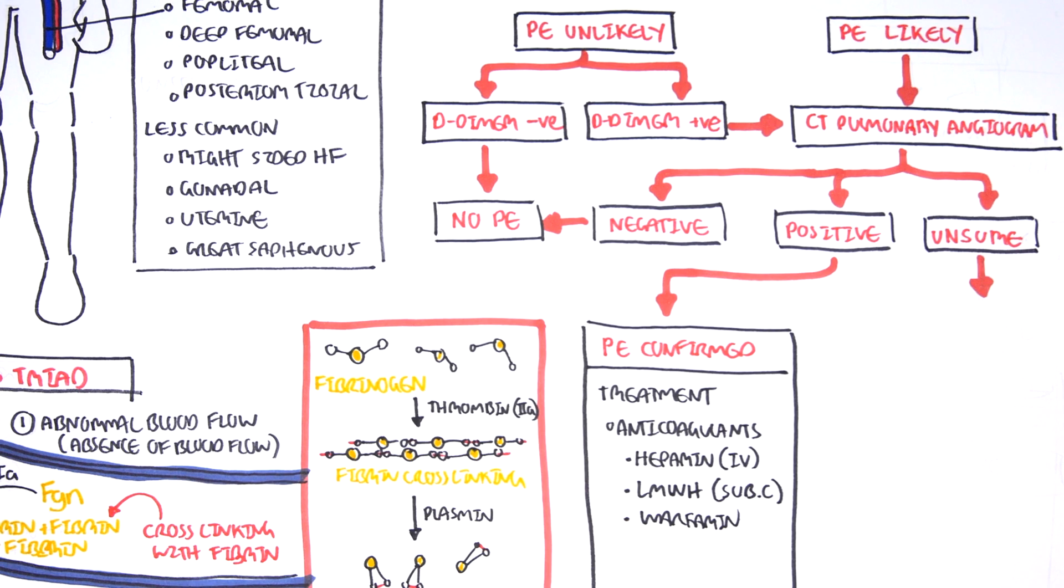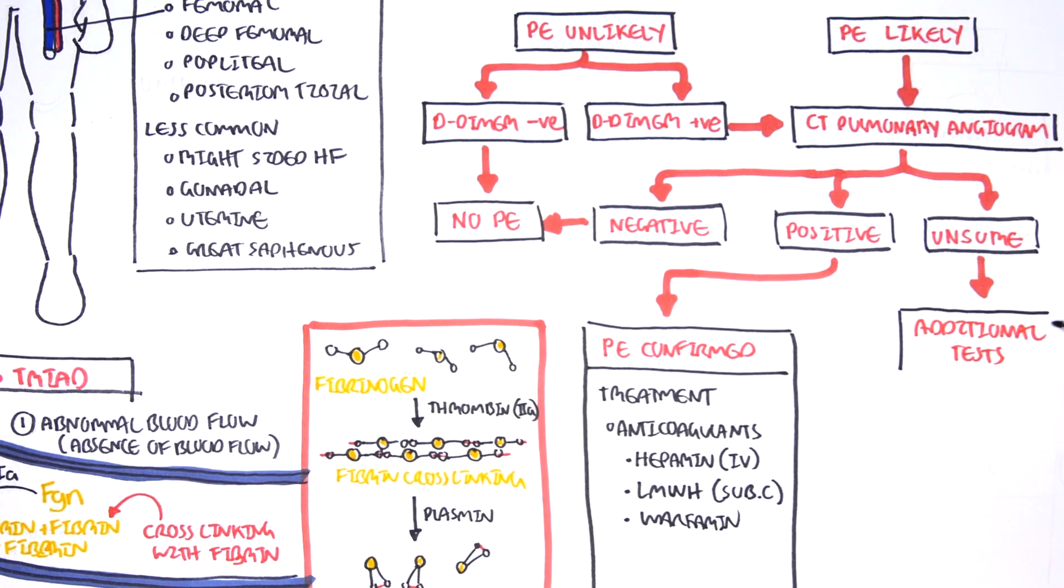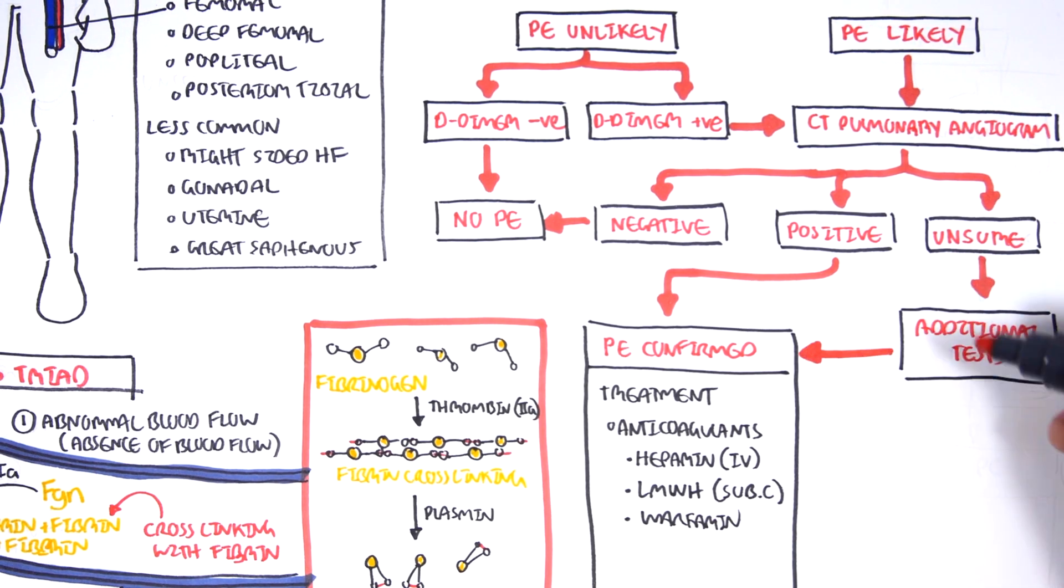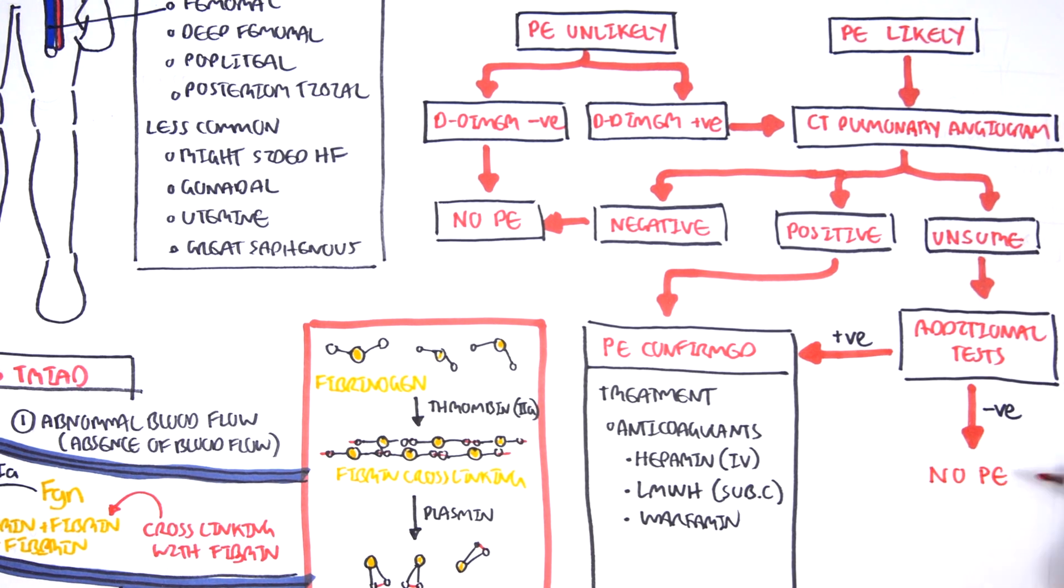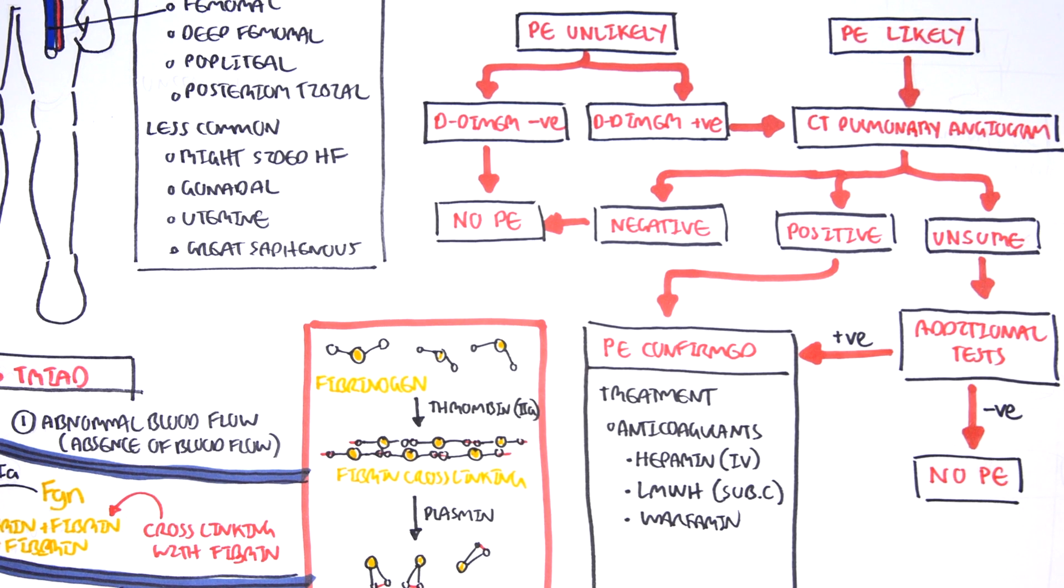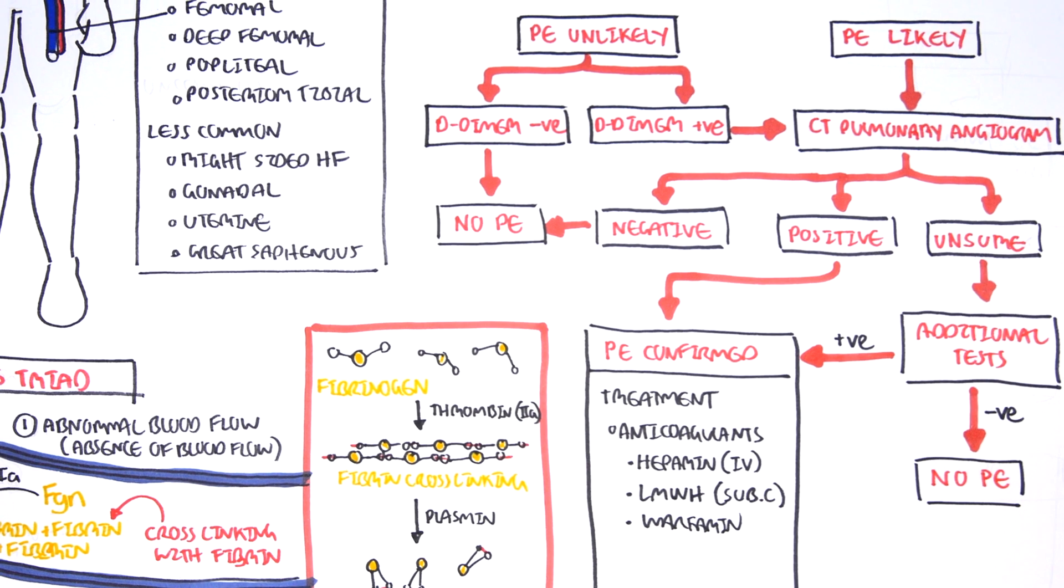If after the CT pulmonary angiogram you are unsure, there can be an additional test performed such as the ventilation perfusion scanning. If it's positive, then you can rule in pulmonary embolism but if it's negative, the person probably doesn't have PE so it doesn't need treatment. So I hope that made sense, this algorithm for helping in the diagnosis of PE.